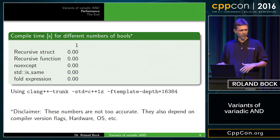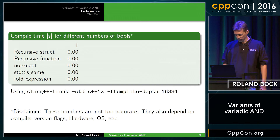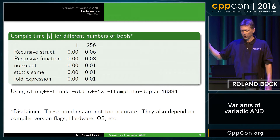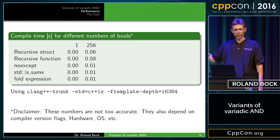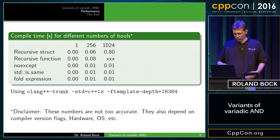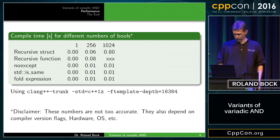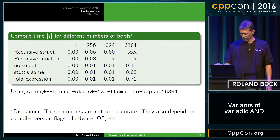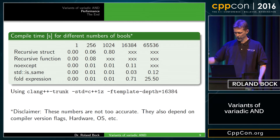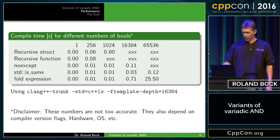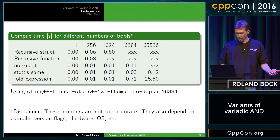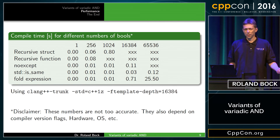Within the limits of my measurement techniques, basically for one argument they all are instant. If you go to higher numbers, you will see that recursion is actually pretty slow compared to everything else. If you go to really high numbers, you will see crashes in the compiler — the first approach already crashes. Recursion is really slow, and with even higher numbers, more crashes. Noexcept also crashes, and by now the fold expressions are about a factor of 2,000 slower than std::is_same.